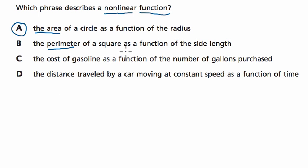So the perimeter of a square as a function of the side length, that means the perimeter of a square based on the side length. So let's say we have a square, and we want to find the perimeter. Well, what if each side is one? What's the perimeter? Let's make a little table. Side length, perimeter. If each side is one, the perimeter is four.